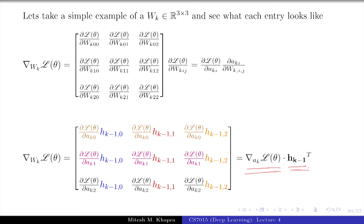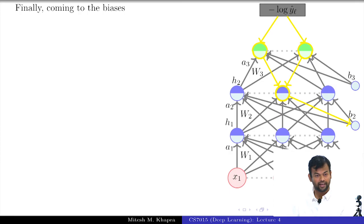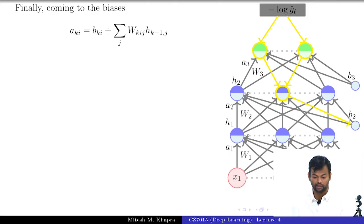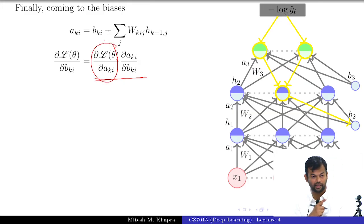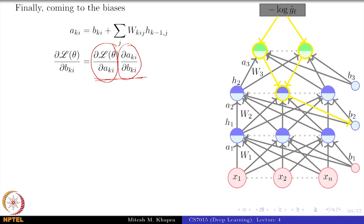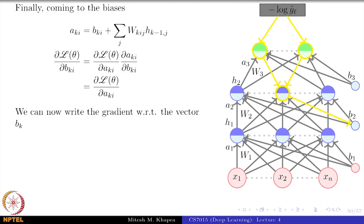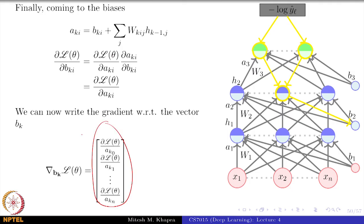Finally, we come to the biases. Taking the derivative of the loss with respect to b_{k,i}: by the chain rule, this equals the partial of the loss with respect to a_{k,i} times the partial of a_{k,i} with respect to b_{k,i}. Since a_{k,i} = b_{k,i} + (weight terms), the partial of a_{k,i} with respect to b_{k,i} is simply 1. Therefore, the gradient of the loss with respect to the bias b_k is just the gradient with respect to the pre-activation layer a_k. We are now done with all the gradients we were interested in.